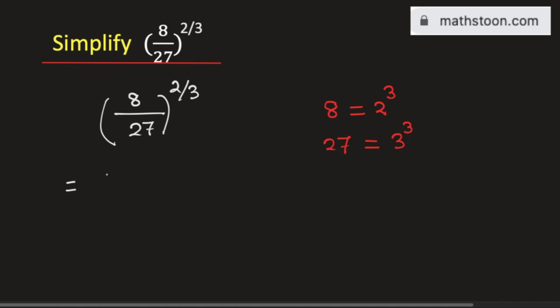So this value can be written as [(2/3)³]^(2/3).